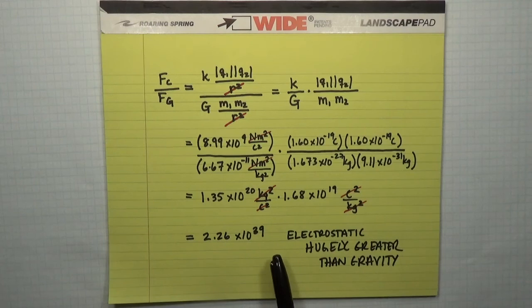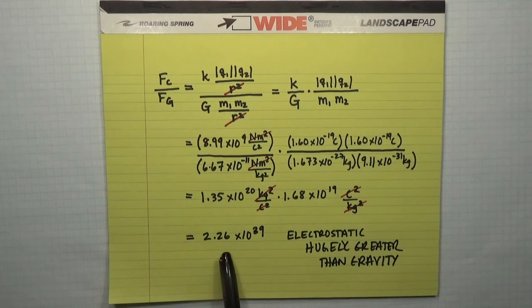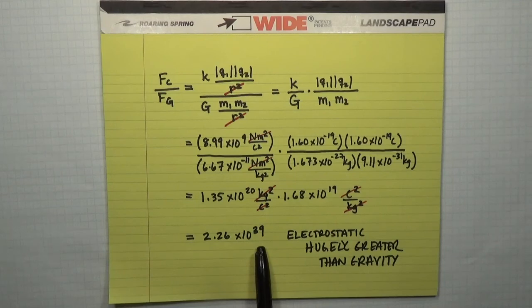Always, in any problem, when you neglect a force, it's your choice. You're making the judgment, as the person solving the problem, that it's not important. And if you ever doubt yourself, you can include it. But what you see is that when you get numbers like this, the ratio of the two is so dramatically different that even if you did include the gravitational force, it wouldn't make any difference to your problem.